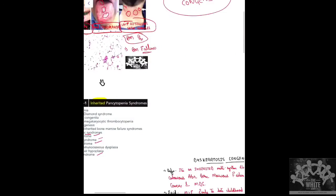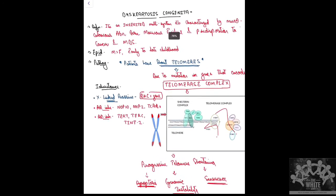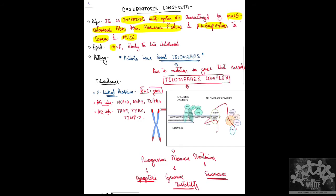Dyskeratosis Congenita is an inherited disorder affecting multiple systems, characterized by mucocutaneous abnormalities — mucosal abnormality in terms of leukoplakia, cutaneous abnormality in terms of hyperpigmented lesions — along with bone marrow failure and predisposition to solid organ malignancy and myelodysplastic syndrome (MDS).